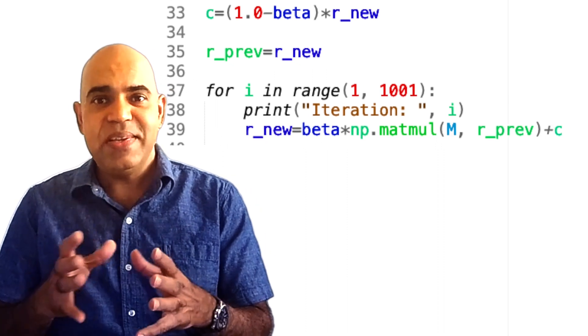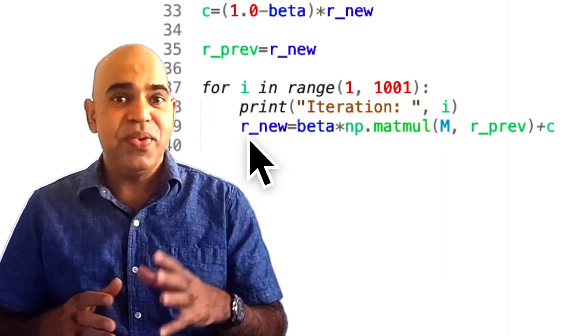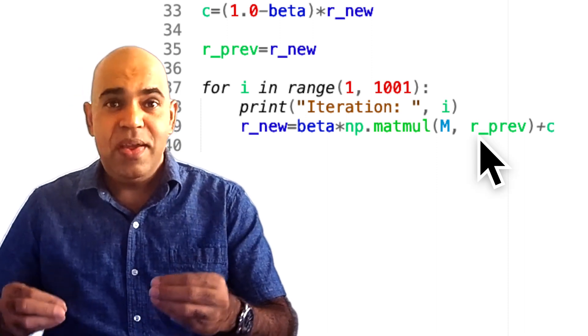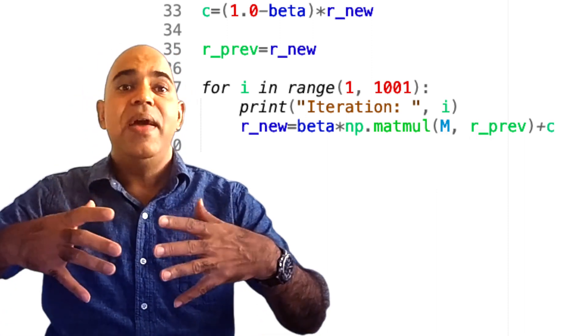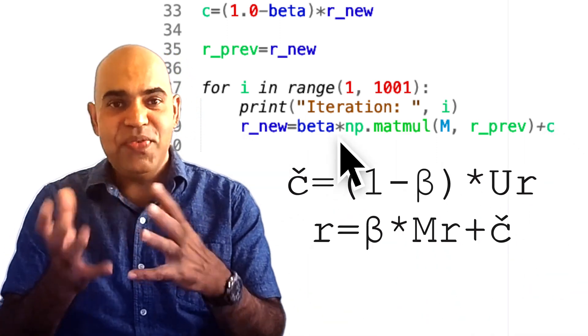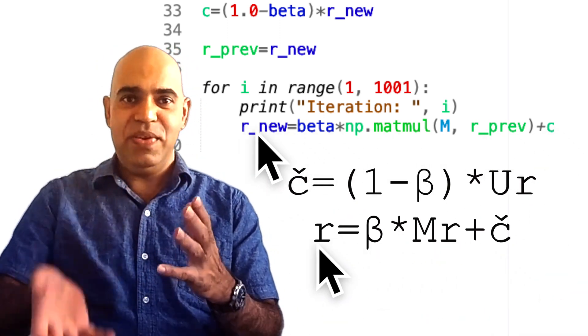Within each iteration, we first calculate the new rank vector r_new based on the previous rank vector r_prev, the transition matrix M, and the teleportation vector C. Note that we are using the formula that we designed in the previous video.